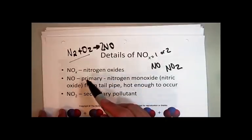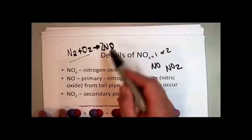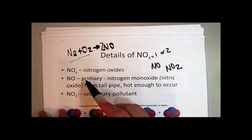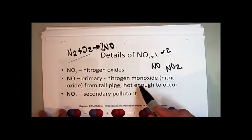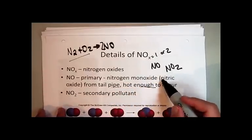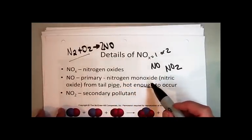We call this a primary pollutant, nitrogen monoxide, because it's first. It is a pollutant that comes from your tailpipe. It's hot enough to occur. Very small amounts of it come out, but it's called a primary pollutant.